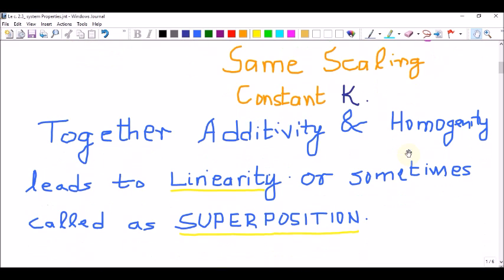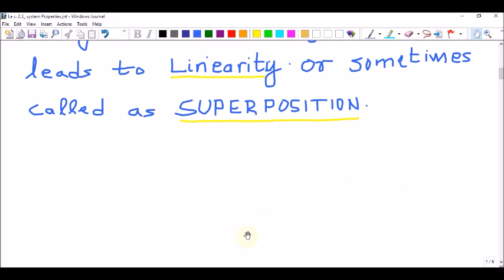Together, we call the property of additivity and homogeneity the linearity property, or systems that obey this property are called systems with superposition.